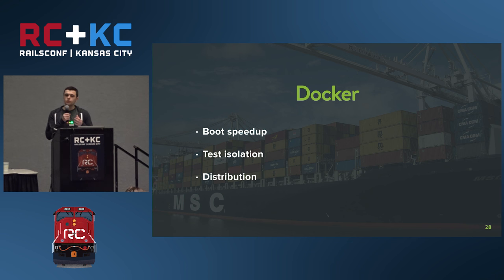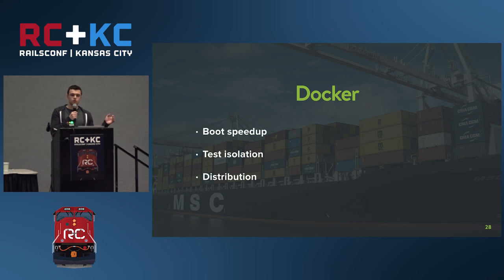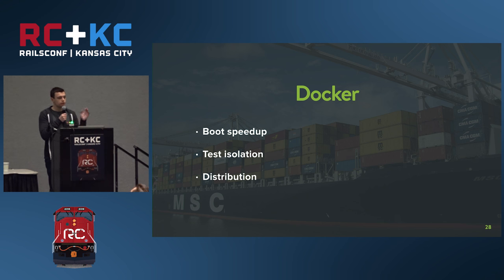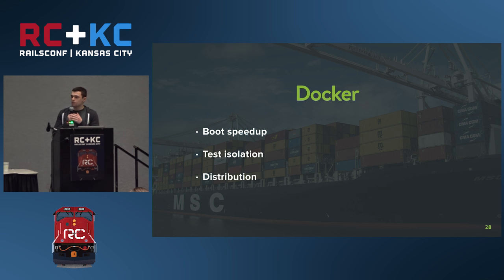The large speedup we got on compute came from using Docker containers to run our tests. We do all configuration — getting dependencies, compiling assets — during the container build, so you only do it once. The moment a container is on a machine, it can instantly start running tests. We also get test isolation from Docker, and Docker's distribution API means most things speak Docker, so we can place containers anywhere as long as we announce the registry location.